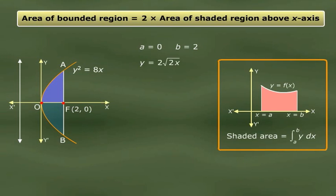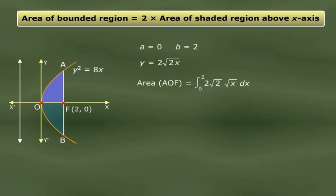So the area of the shaded region above the x-axis is given by this expression: integral from 0 to 2 of 2√2 · √x dx. We can take 2√2 outside the integral sign. We do that. So what do we do now? We integrate.